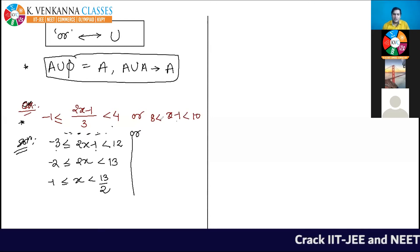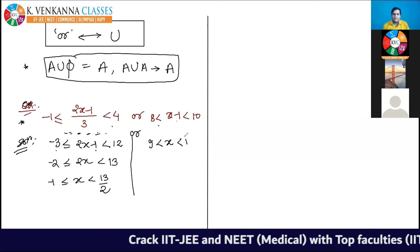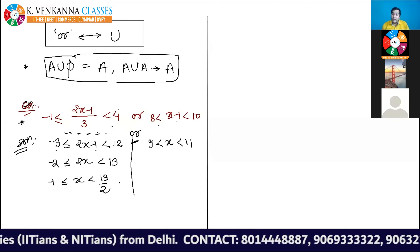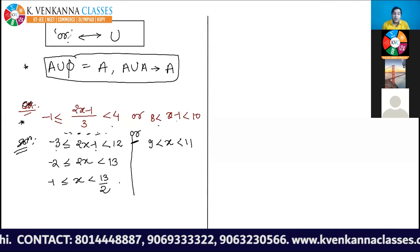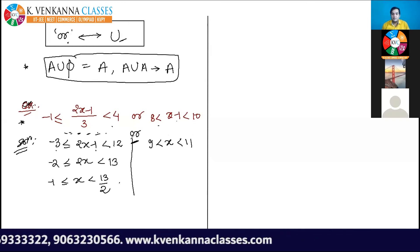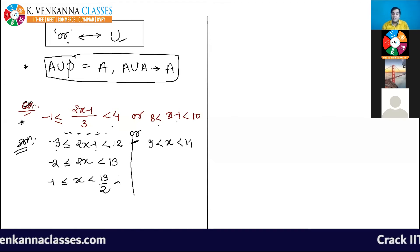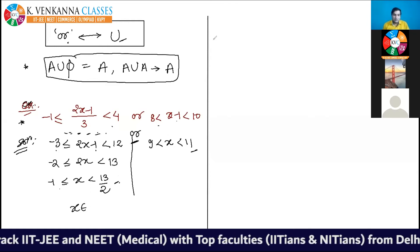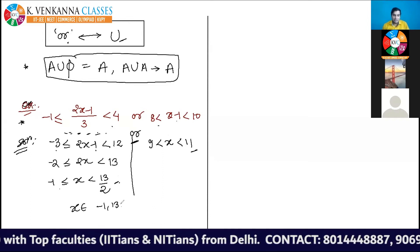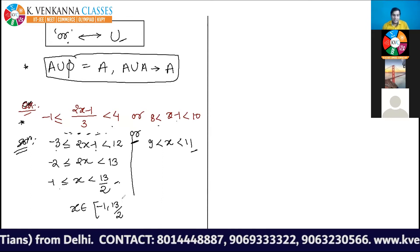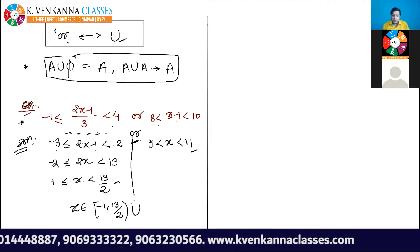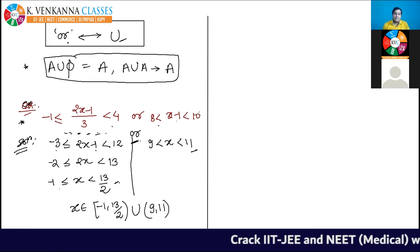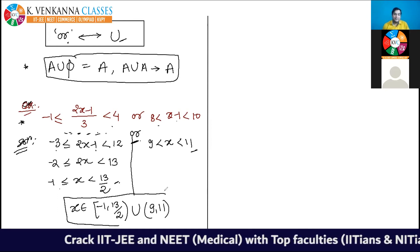Now move to the second inequality. In between there is an R, and R means union. Add 1 on all sides to get 9 ≤ 2x - 1 ≤ 11 — wait, solving that part gives 9 < x < 11. So you combine both results with the symbol of union. Your answer is: x ∈ [-1, 13/2) ∪ (9, 11), closed at -1, open at 13/2, open on both sides at 9 and 11.